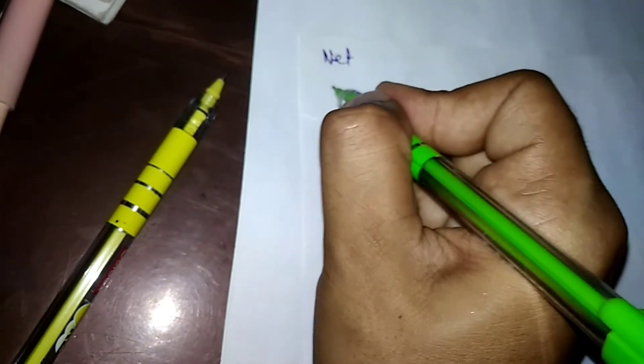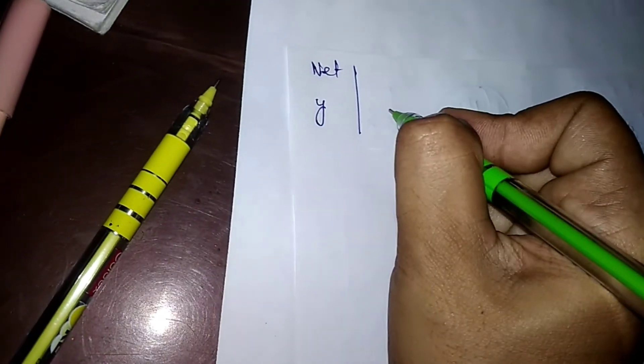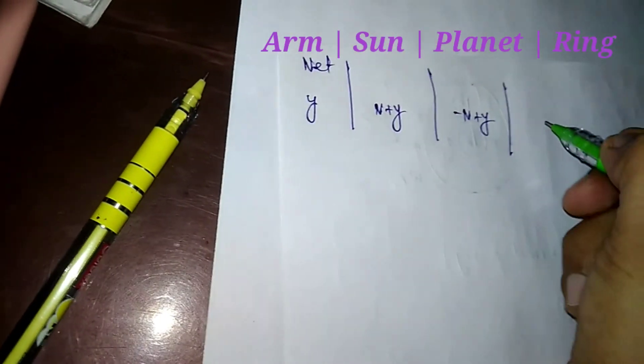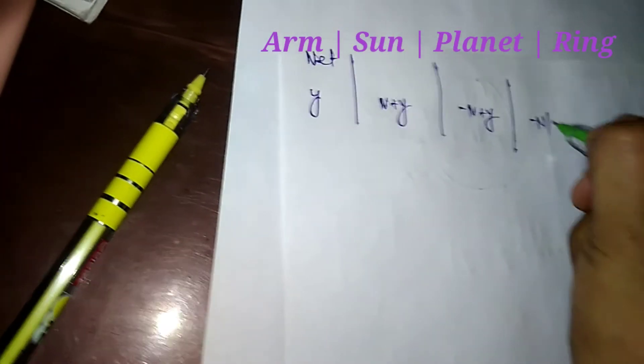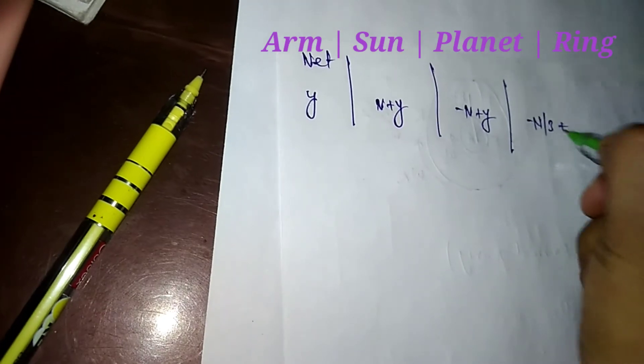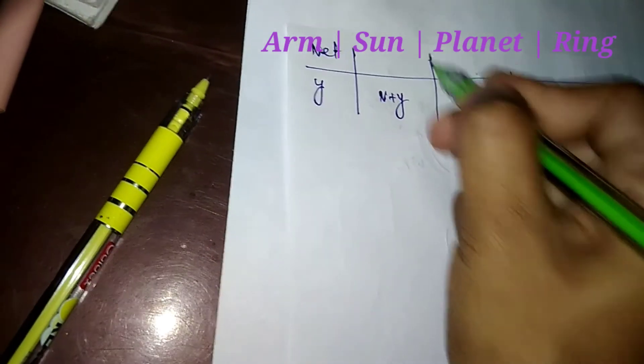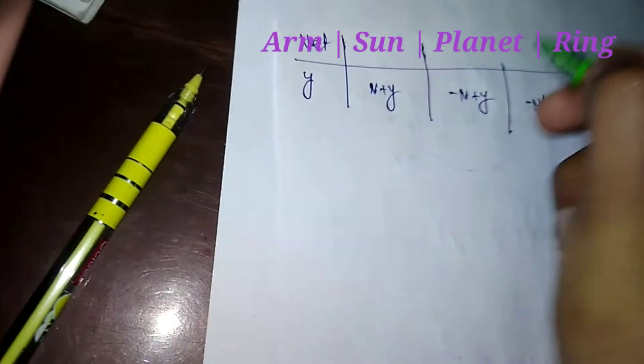The net speeds of all gears including the arm are: arm = y, sun = N + y, planet = -N + y, and ring gear = -N/3 + y.